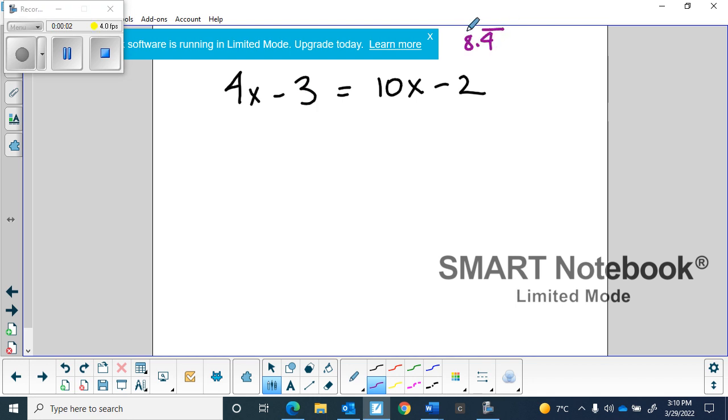For 8.4 we start seeing questions where we have the variable on both sides. We have x's on both sides of the equal sign. So our first job before we can even start solving is we want to move the variables onto the same side.